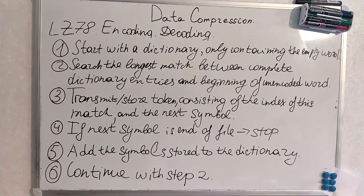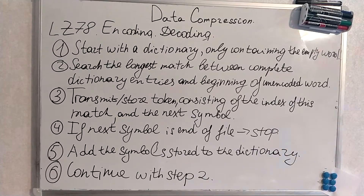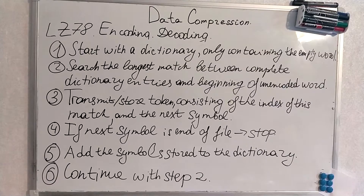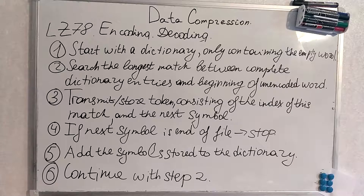Now we are going to talk about LZ78 encoding and decoding. The outline of the algorithm might look scary because it consists of 6 steps, but actually describing it formally takes much longer than doing an example. We start with a dictionary filled with source words we know, beginning with an empty symbol. We transmit and store a token consisting of the index of the match and the next symbol. If the next symbol is end of file we stop, otherwise we add the symbols to the dictionary and continue with step 2.